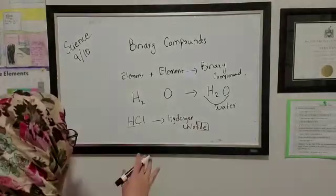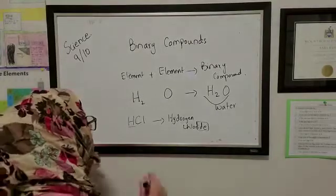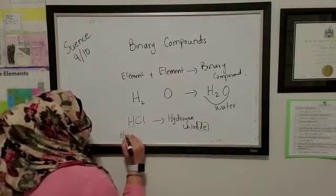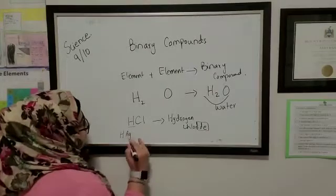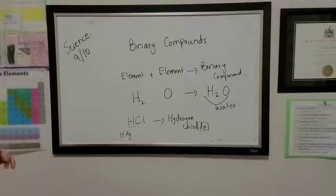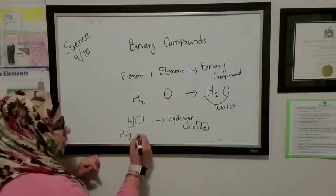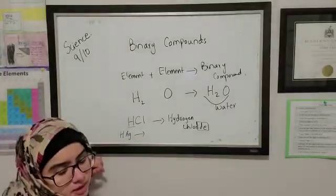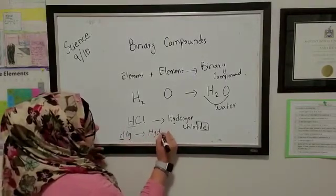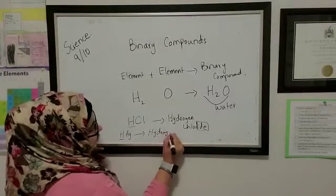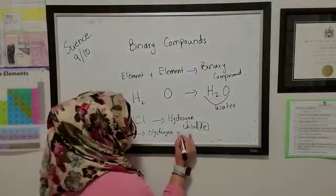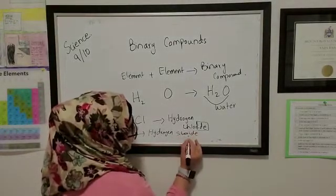For example, let's take, I'm just writing down a random binary compound. If you have H-AG. So we know H stands for hydrogen and AG stands for silver. So how are we going to name this compound? This compound will be hydrogen, we'll read it as is, hydrogen, and this is silver. We're going to say silveride, okay? Silveride.